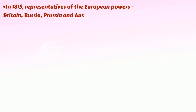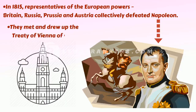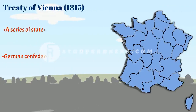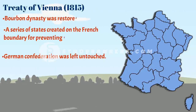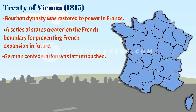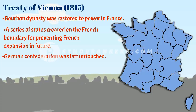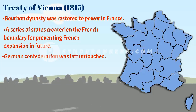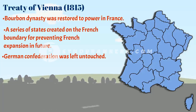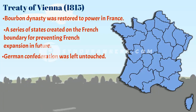In 1815, representatives of the European powers — Britain, Russia, Prussia, and Austria — collectively defeated Napoleon. They met and drew up the Treaty of Vienna of 1815, with the object of undoing most of the changes made during the Napoleonic Wars. According to the Vienna Treaty, the Bourbon dynasty was restored to power in France. France lost the territories it had annexed under Napoleon. The Kingdom of the Netherlands, which included Belgium, was set up in the north, and Geneva was added to Piedmont in the south to prevent French expansion in future. Prussia was given important new territories on its western frontiers and a portion of Saxony in the east. Austria was given control of northern Italy, Russia was given part of Poland, and Napoleon's German Confederation of 39 states was left untouched.